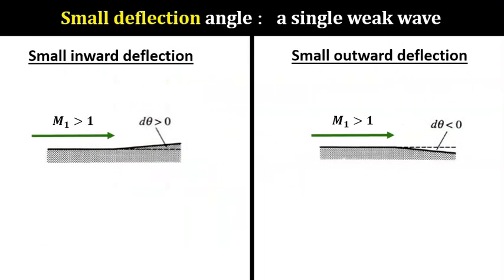To start our formulation, let's compare between the two simplest cases of inward and outward deflections. In each case, we have an infinitesimal deflection dθ, one inward and another one outward.